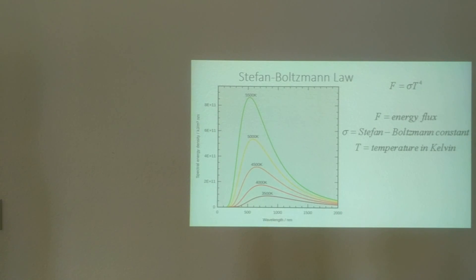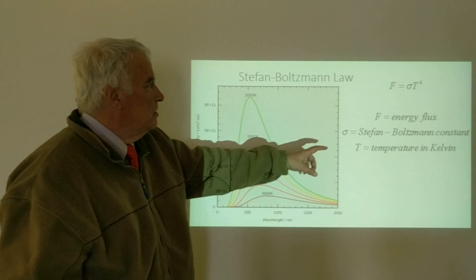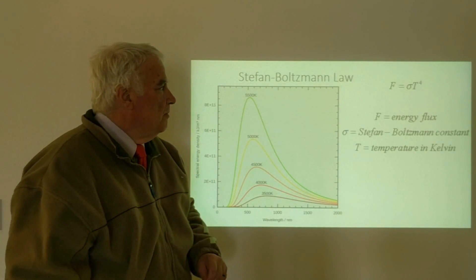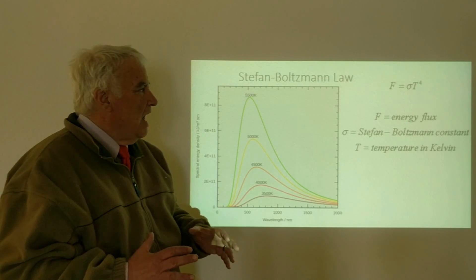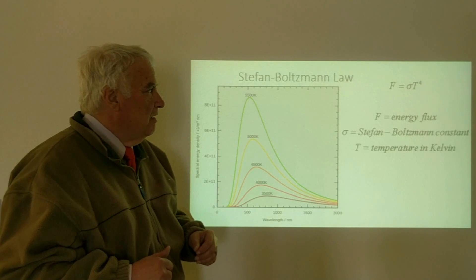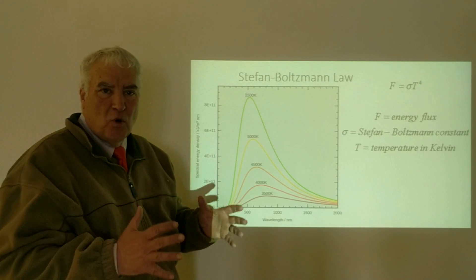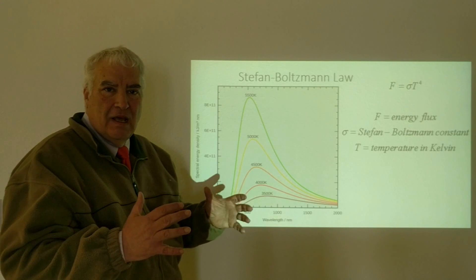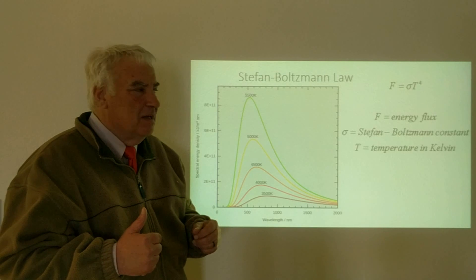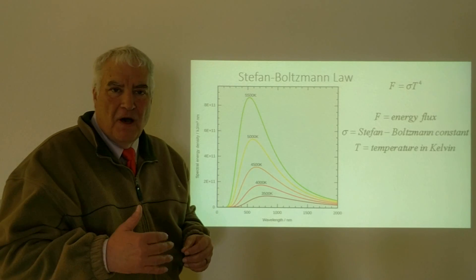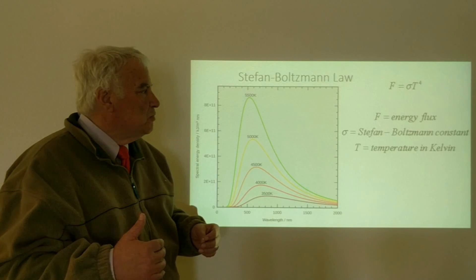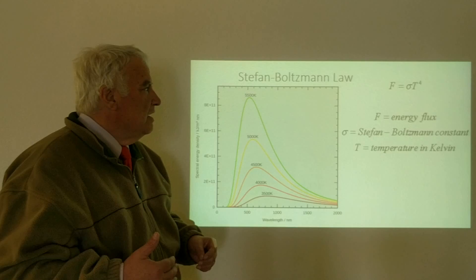The Stefan-Boltzmann law is a law that shows us how the energy flux from any object at a temperature that is considered a blackbody—which means that it absorbs efficiently and emits efficiently—will emit light. Stars follow this principle very well.